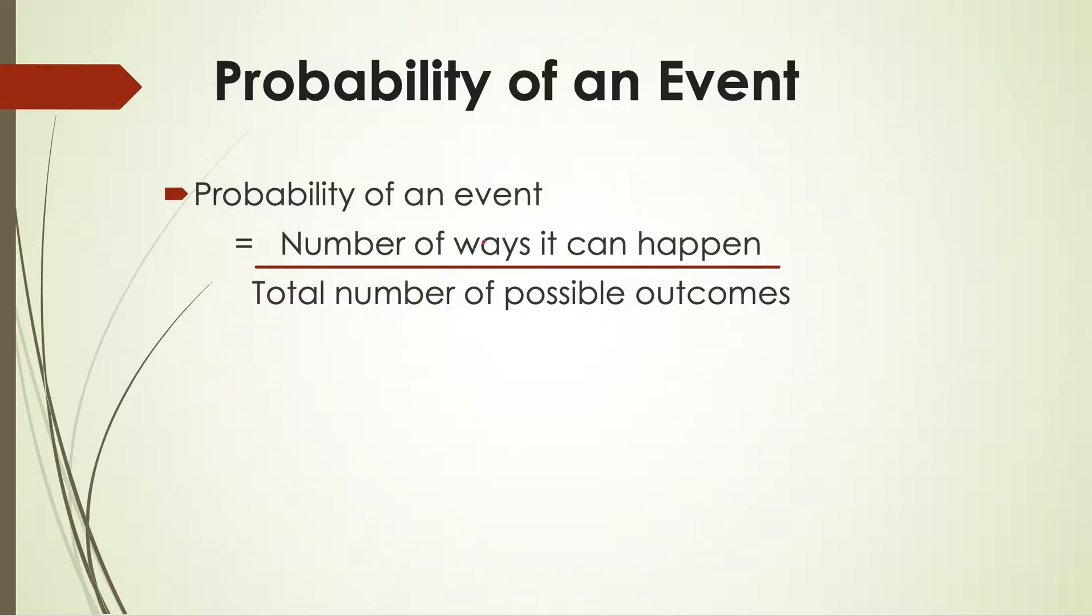Now let's see the definition of probability of an event. It's defined as the number of ways an event can happen divided by the total number of possible outcomes. Let's see a few examples.